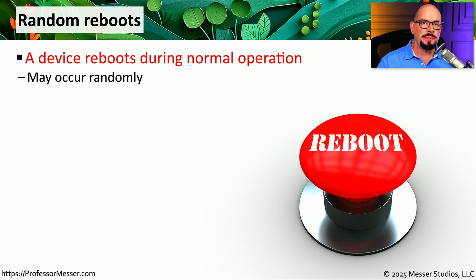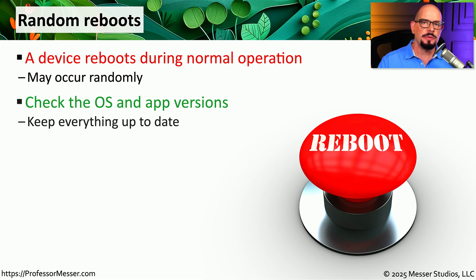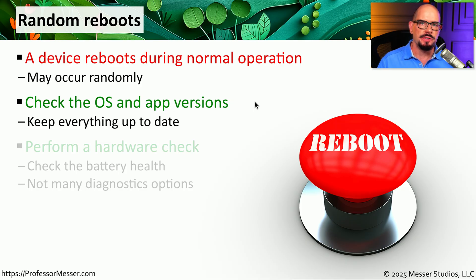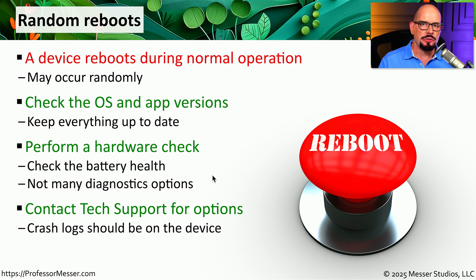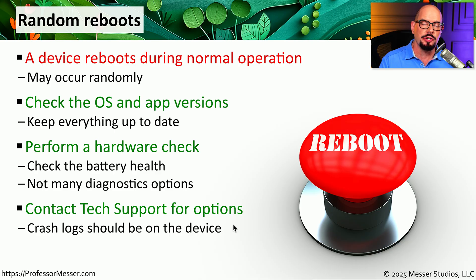A mobile phone might reboot itself in the middle of a phone call — abruptly, with no message on the screen explaining why — and then you'd have to make the call again. For troubleshooting this problem, start with the software: make sure your operating system and all the apps running on your device are up to date with the latest versions. This could also be related to the hardware of the mobile device, so you might want to check the battery health and see if other diagnostic tools are available. It often requires going into the detailed logs of the system to understand what occurred during the reboot. Your technical support team should be able to look at the crash logs on your device to determine why this occurred. In one particular case, this was a hardware problem identified through the logs, and the phone was simply replaced to resolve the issue.